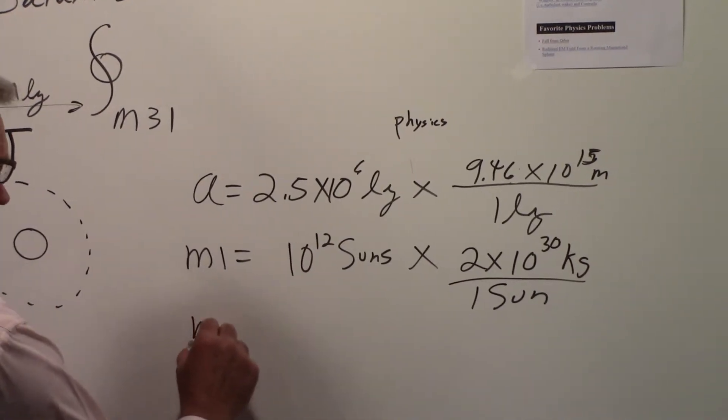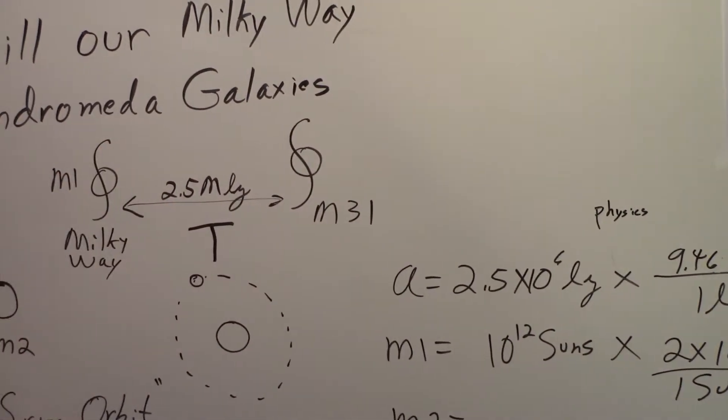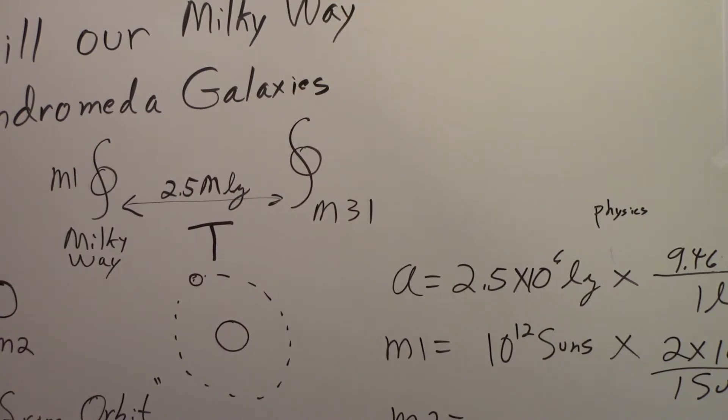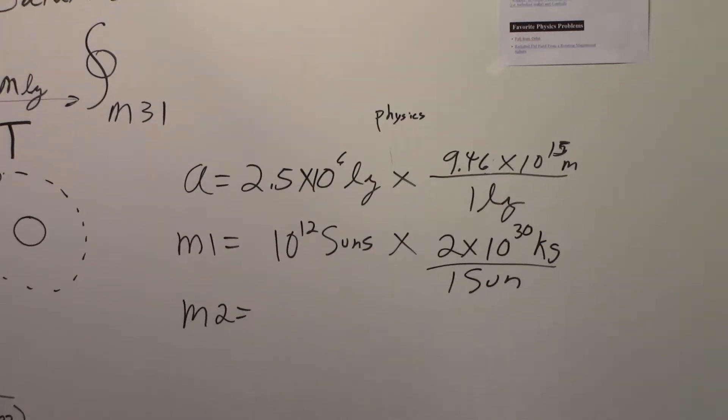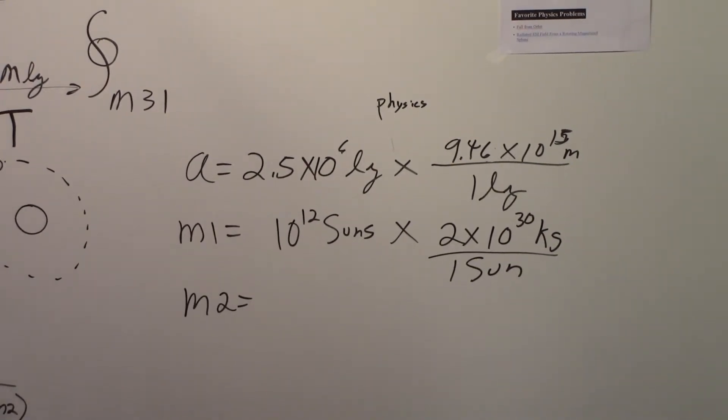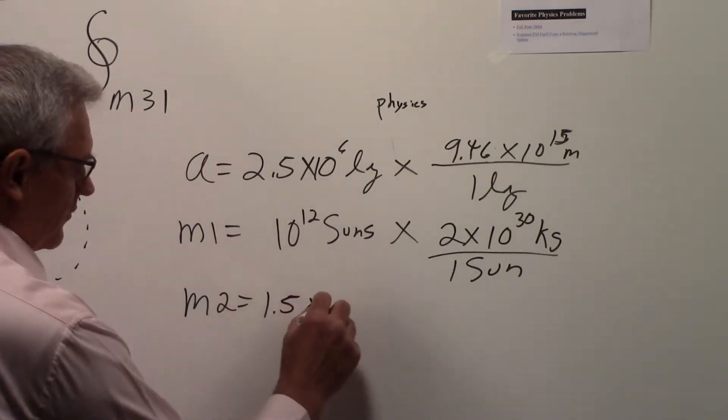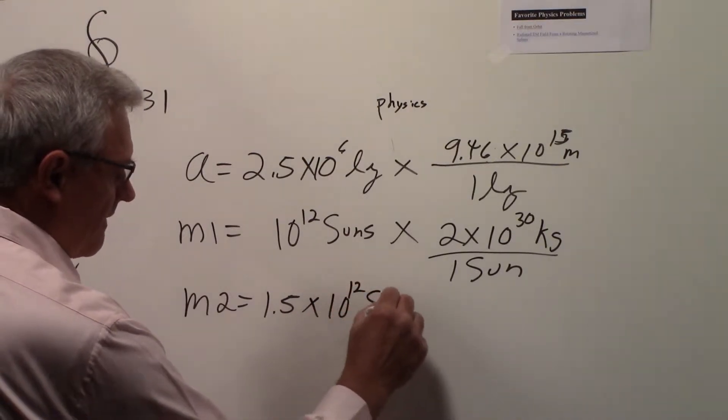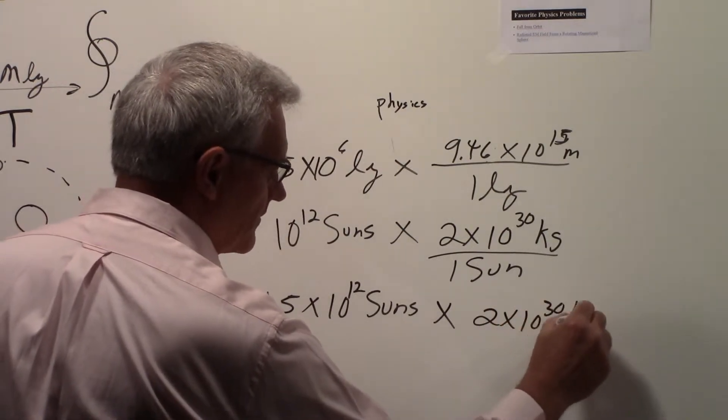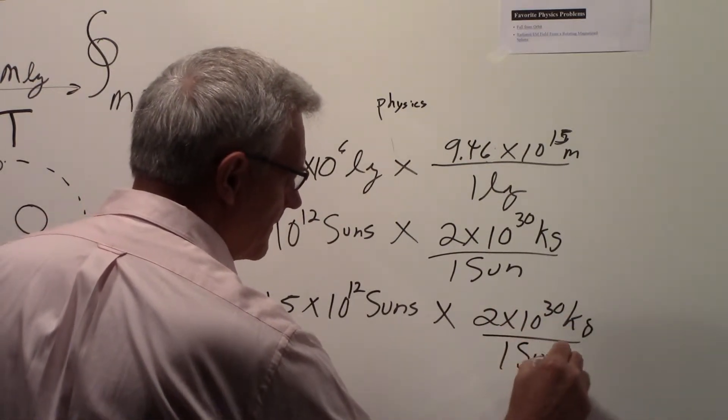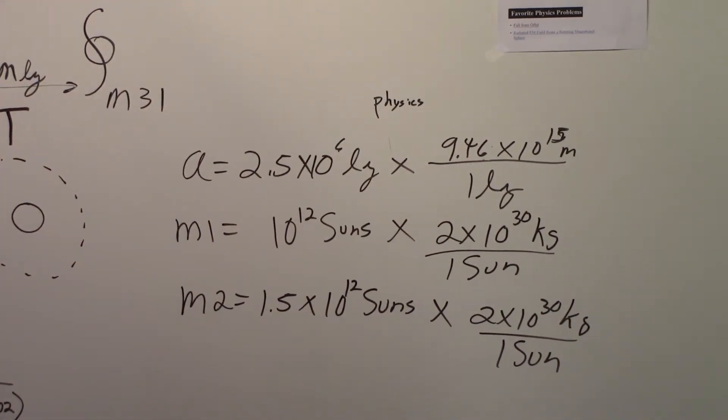We have a similar number for M31, for the Andromeda galaxy, except that is a slightly larger galaxy. The mass that we would use for that in this simple example is 1.5 times 10 to the 12th suns, and that again 2 times 10 to the 30th kilograms over 1 sun. So that is the mass for the Andromeda galaxy.